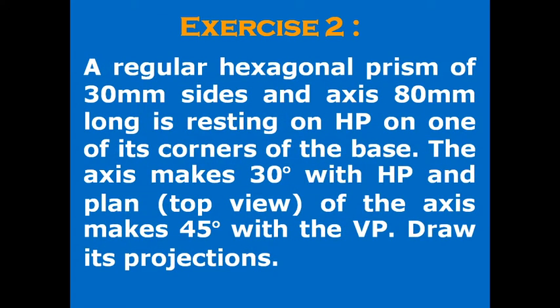We have a hexagonal prism of 30 mm sides and axis 80 mm which is resting on HP on one of its corners of the base. The axis makes 30 degrees with HP and the plan, also called as top view, of the axis makes 45 degrees with VP. Draw its projections.